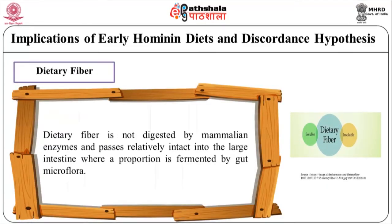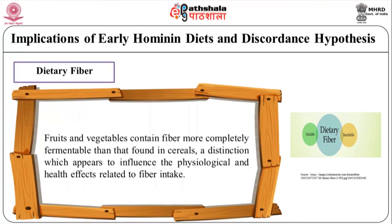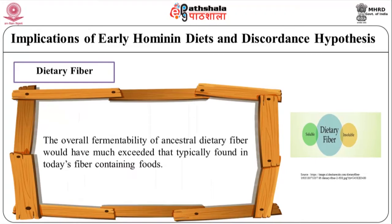Regarding dietary fibre: dietary fibre is not digested by mammalian enzymes and passes relatively intact into the large intestine, where a proportion is fermented by gut microflora. Fruits and vegetables contain fibre more completely fermentable than that found in cereals, a distinction which appears to influence the physiological and health effects related to fibre intake. The overall fermentability of ancestral dietary fibre would have much exceeded that typically found in today's fibre-containing foods.